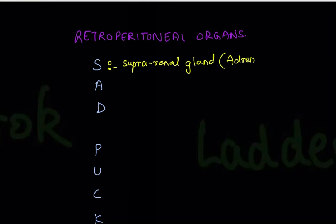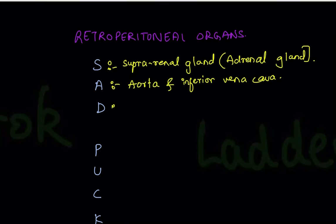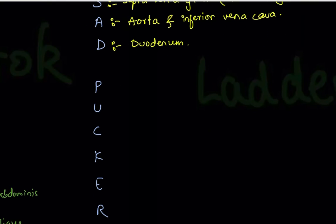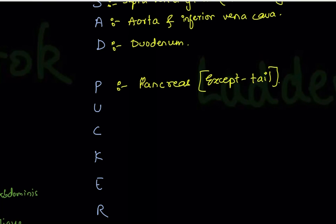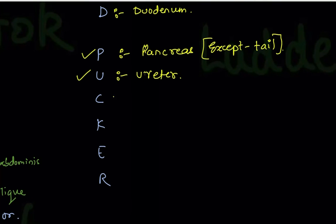S stands for suprarenal gland — also called the adrenal gland, as we covered in the kidney video. A stands for aorta and inferior vena cava. D stands for duodenum. P stands for pancreas — except the tail, which is an intraperitoneal organ (meaning it is covered with peritoneum). U stands for ureter.